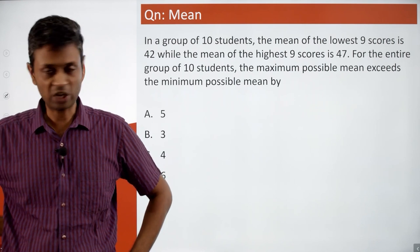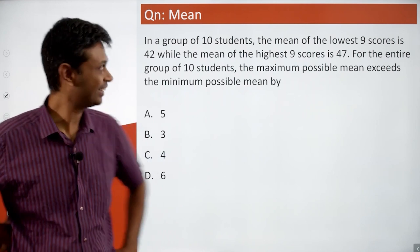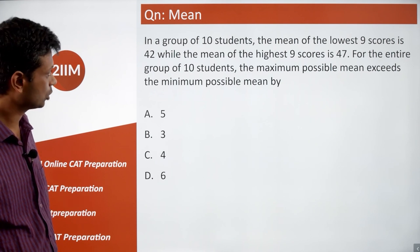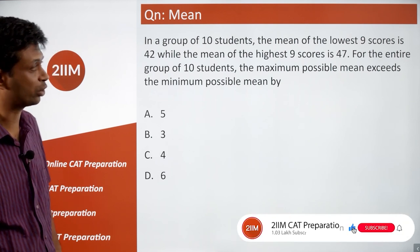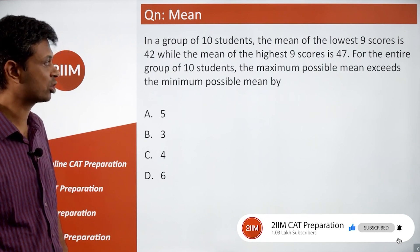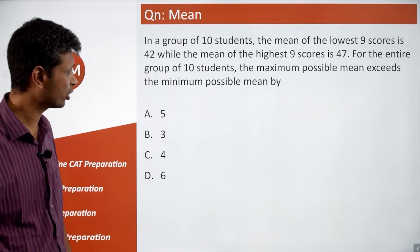This is a lovely, challenging question. In a group of 10 students, the mean of the lowest 9 scores is 42 while the mean of the highest 9 scores is 47. For the entire group of 10 students, the maximum possible mean exceeds the minimum possible mean by...